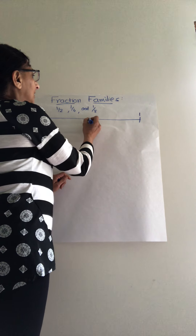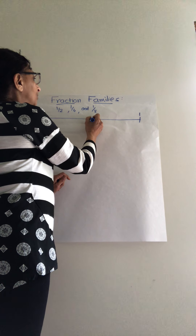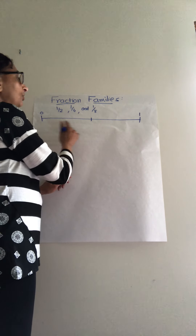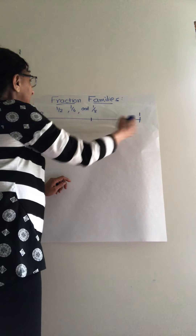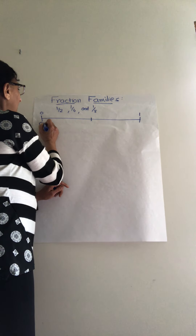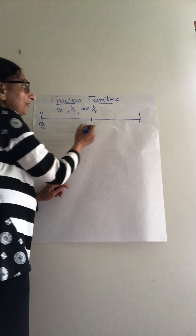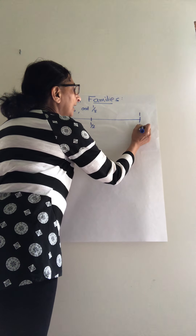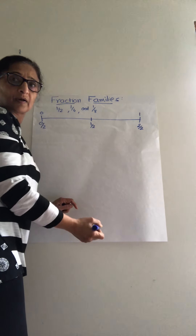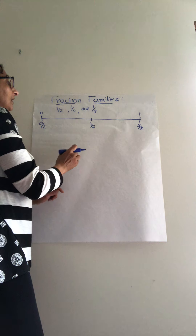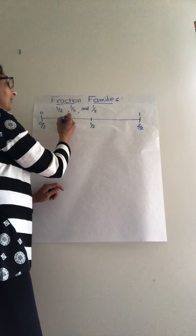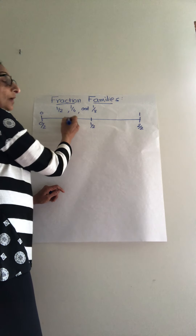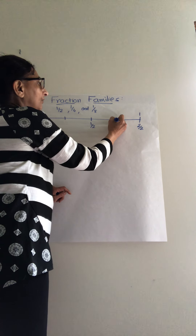After you mark zero and one, cut the line into halves so now you have two equal parts. You can mark zero-half, one-half, and two-half.